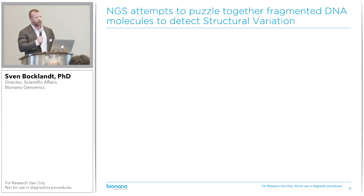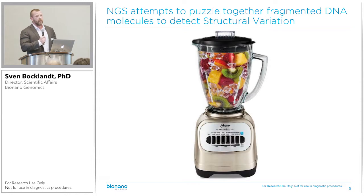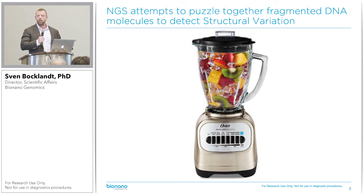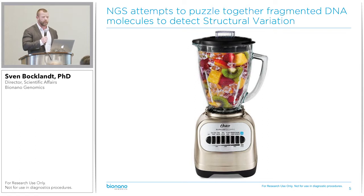But the problem with NGS was that the sequencers didn't come with a microscope — they came with a blender. I would challenge you to tell me how many pieces of strawberry there are in this blender after I turn it on. But that's exactly what you do with NGS: you take a perfectly beautiful intact genome, and you shred it, and then you try to analyze and piece back together what it looked like.